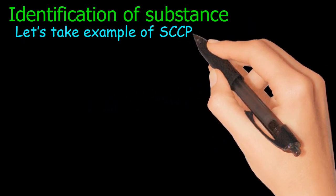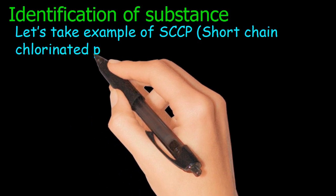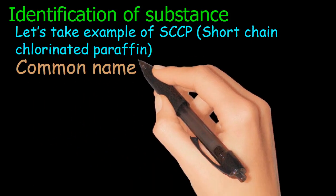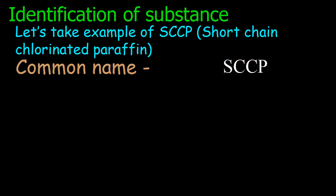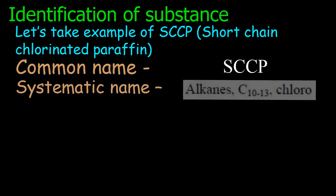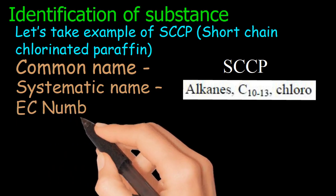Identification of substance. Let's take example of SCCP, short chain chlorinated paraffin. Common name: SCCP. Systematic name: Alkanes, C10-13, Chloro. EC number.